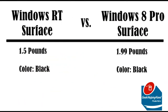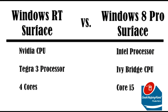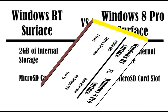Windows RT weighs only 1.5 pounds and Windows 8 Pro is about 1.99 pounds, and they both come in black. Windows RT is running with an NVIDIA CPU and TK3 processor with 4 cores, while Windows 8 Pro is packed a bit more — powered by Intel's Ivy Bridge CPU with an i5 core chip.